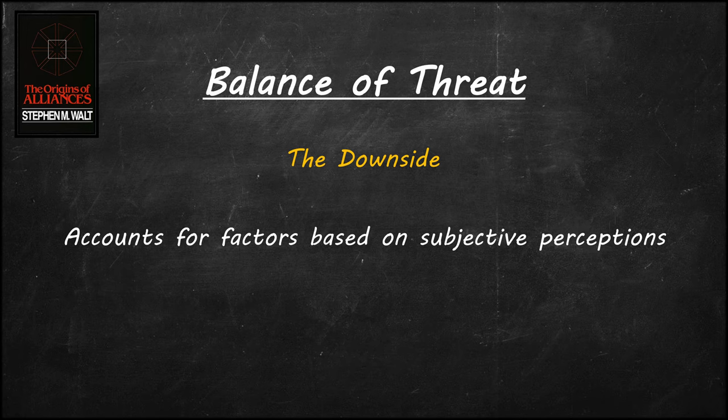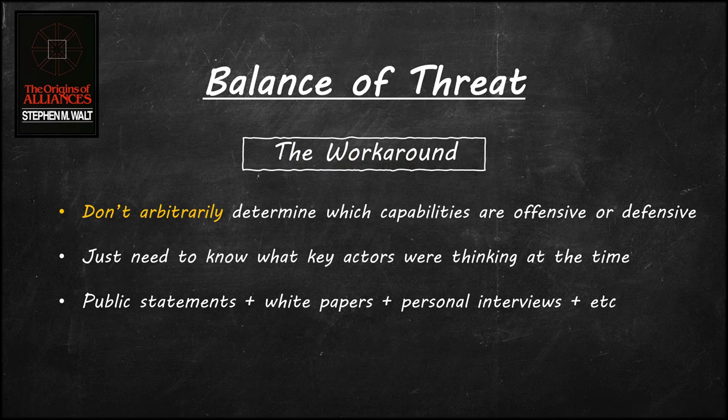The balance of threat theory accounts for the subjective perceptions of states. A possible workaround to this problem would be to focus on finding empirical evidence of how influential institutions and political actors within a state perceived the capabilities of other states. We personally don't have to decide which capabilities are offensive or defensive. We can look for public statements, white papers, news interviews, and so on from key actors within a state to understand how they perceive the capabilities of other states. It's important to acknowledge this aspect of balance of threat theory before moving on to other factors that Stephen Walt analyzes.